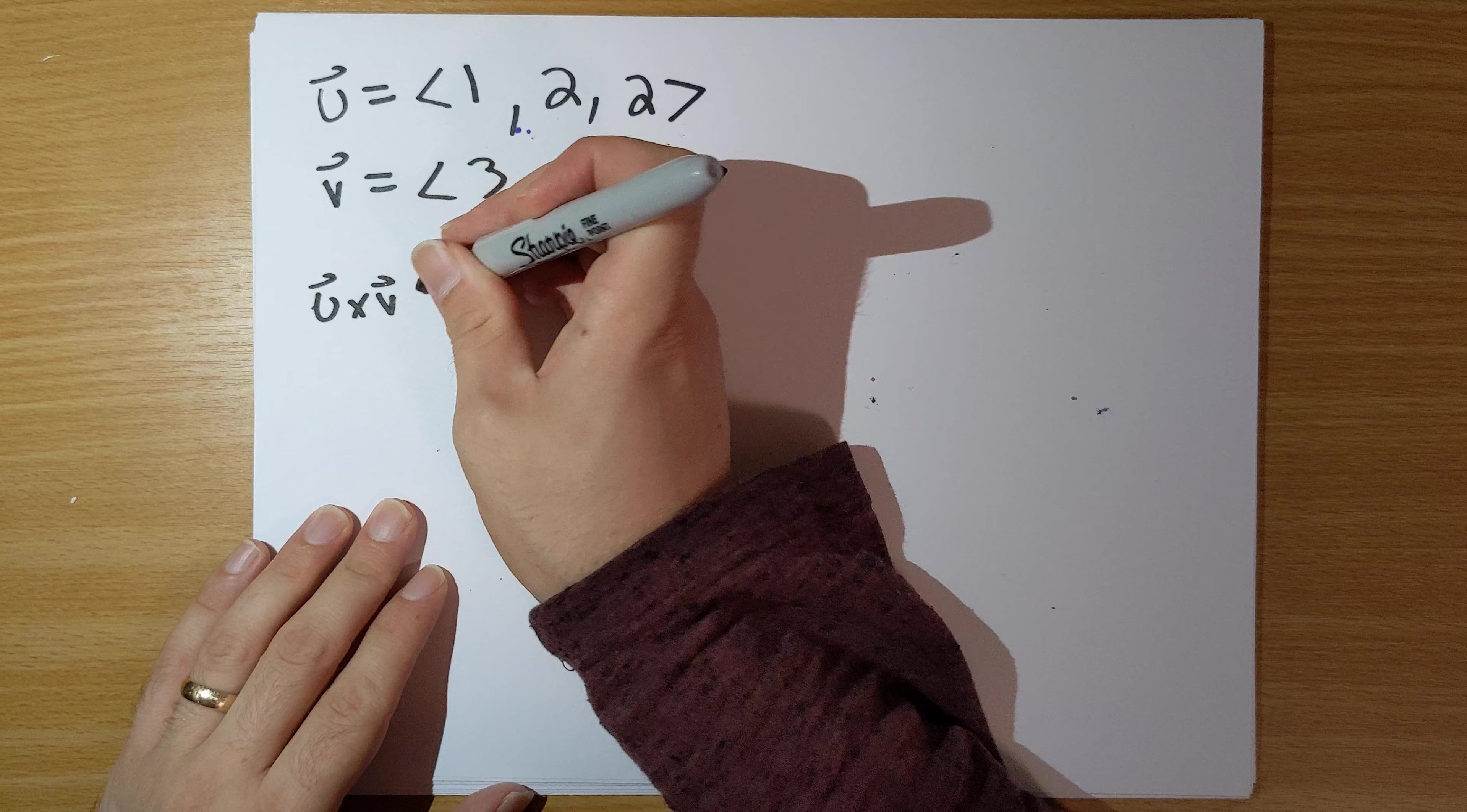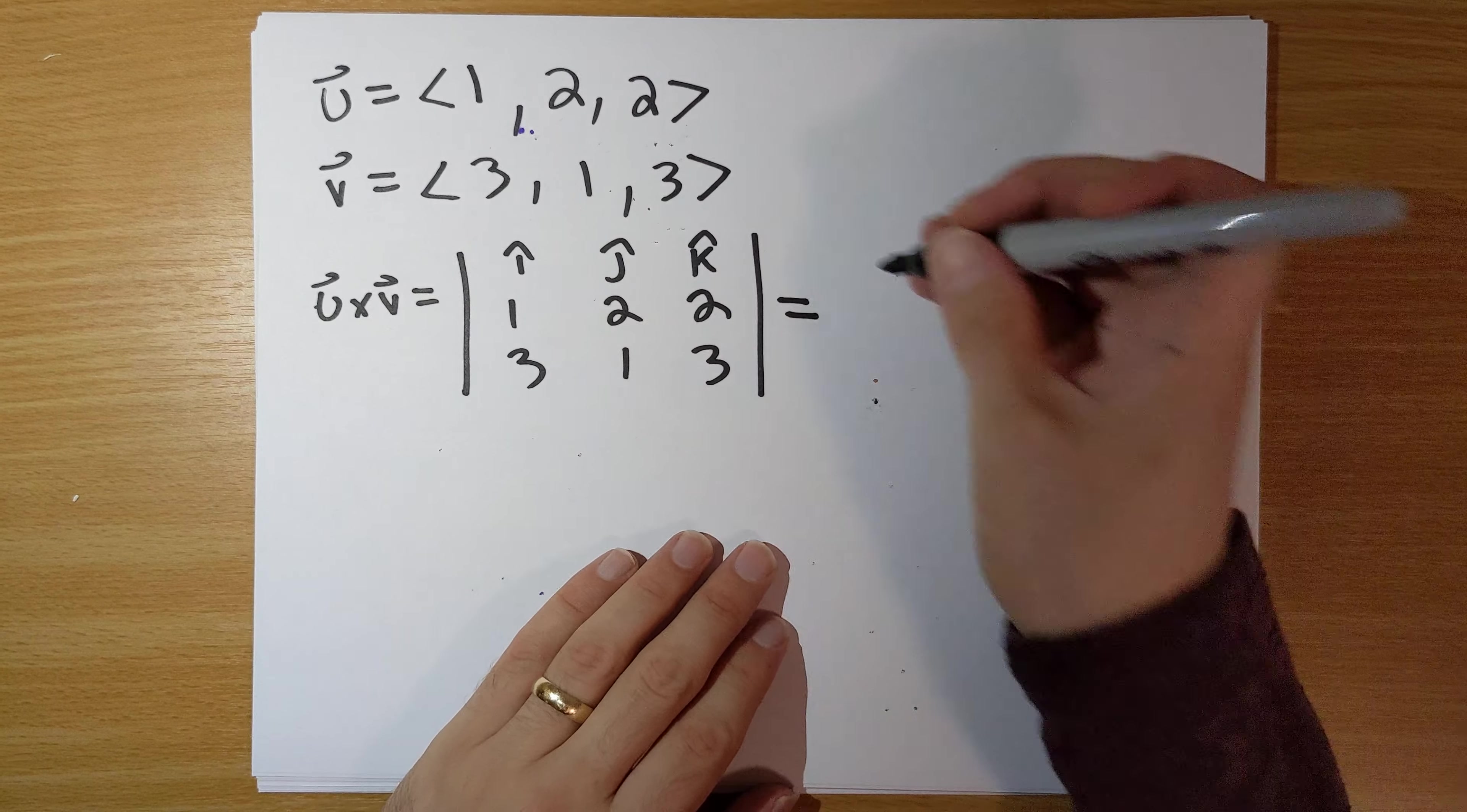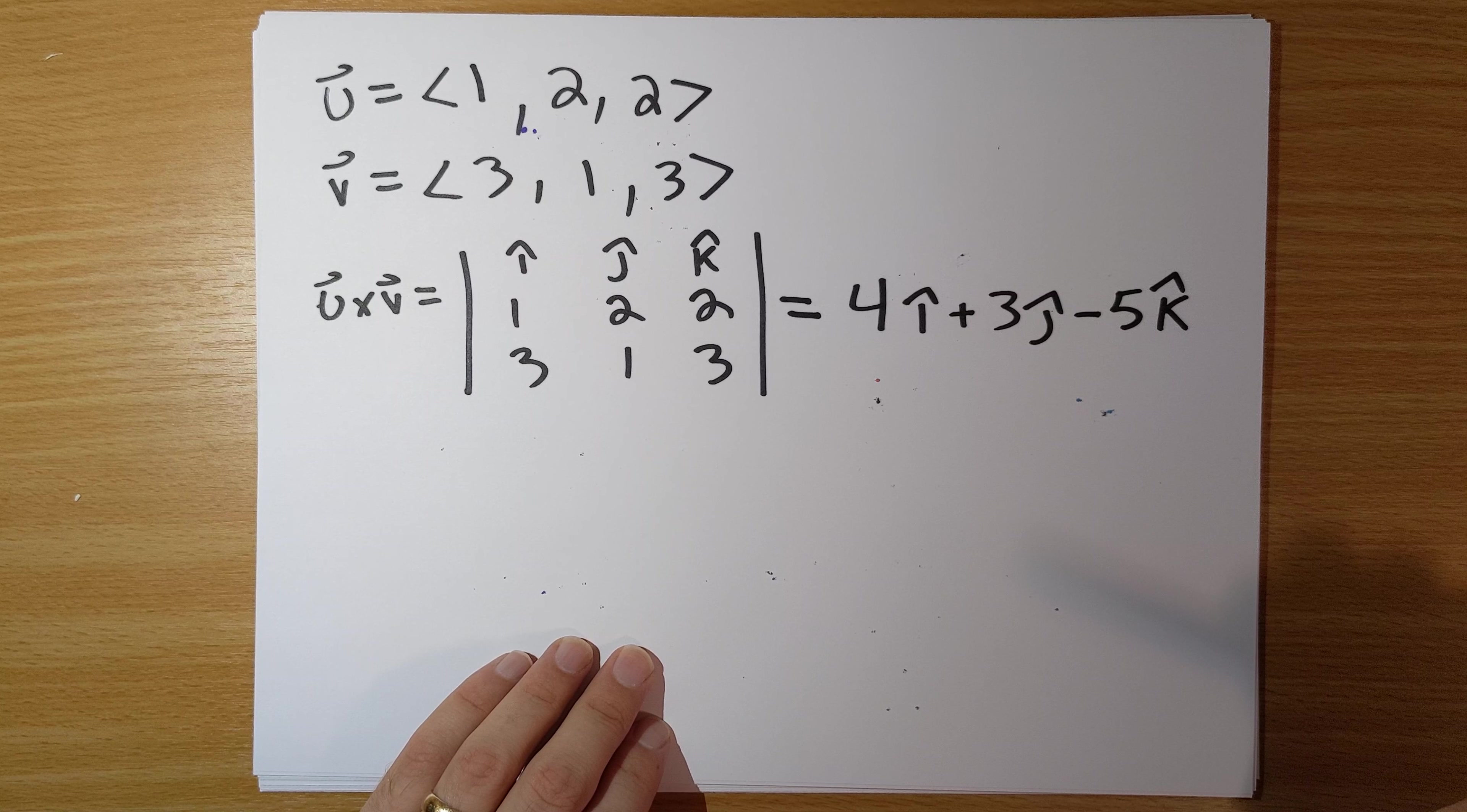So, U cross V is going to be i hat, j hat, k hat, 1, 2, 2, the cross product of these two vectors here. And if you crunch this out, I will leave this as an exercise for you to work out. Maybe as soon as the video is over, or maybe even just pause here to make sure that you get the same answer as I do. 4i hat plus 3j hat minus 5k hat.